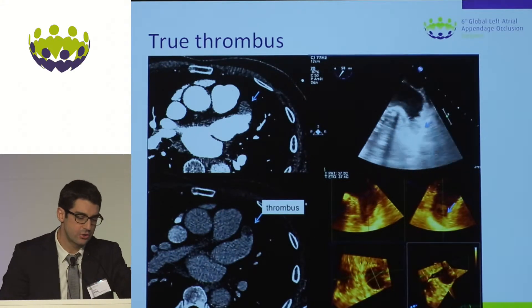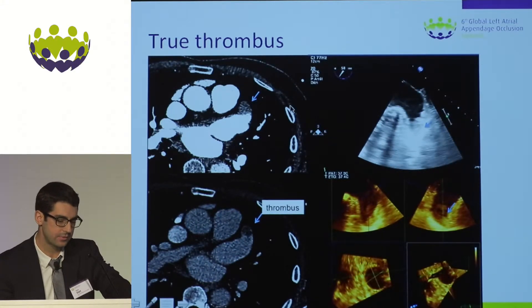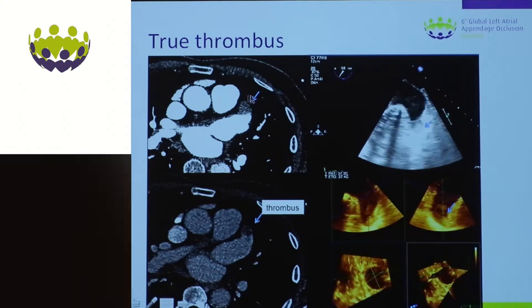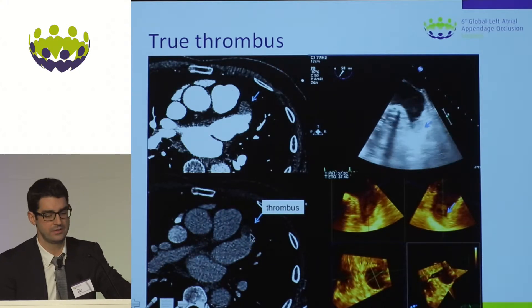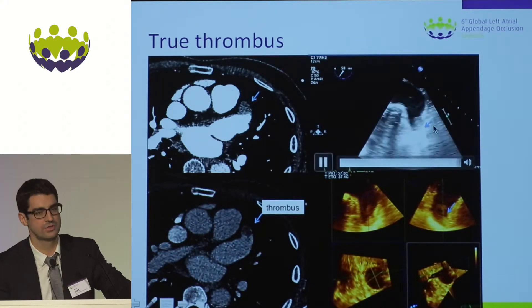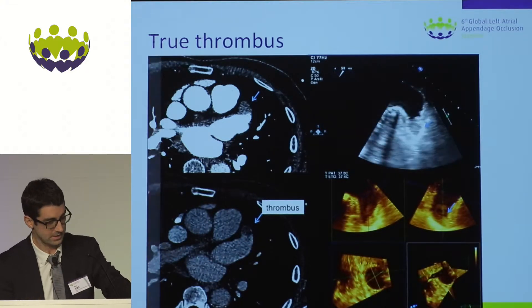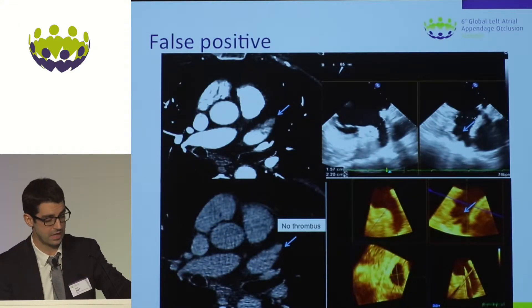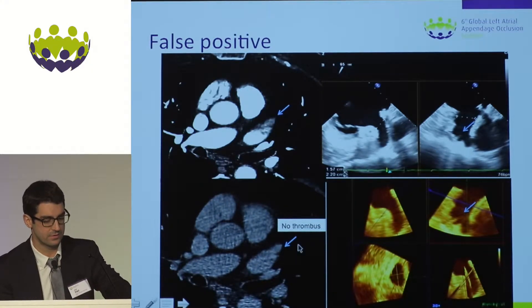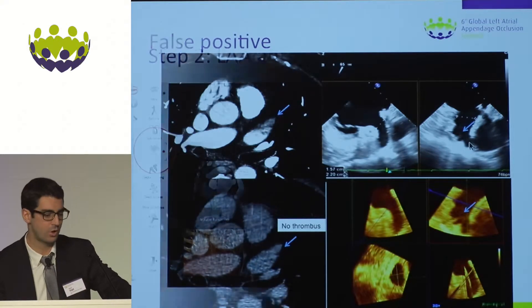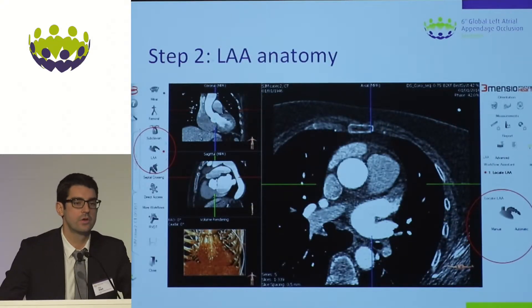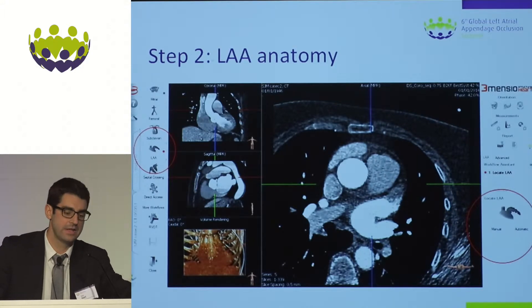Here is an example of a true thrombus: the filling defect is seen on the early imaging and is also present on the delayed imaging, with corresponding TEE images confirming it. In contrast, what we see most of the time is a filling defect on early imaging that is not present on the delayed imaging, and this is confirmed in the cath lab with no thrombus found. Once thrombus is excluded, you can focus on the LAA anatomy.